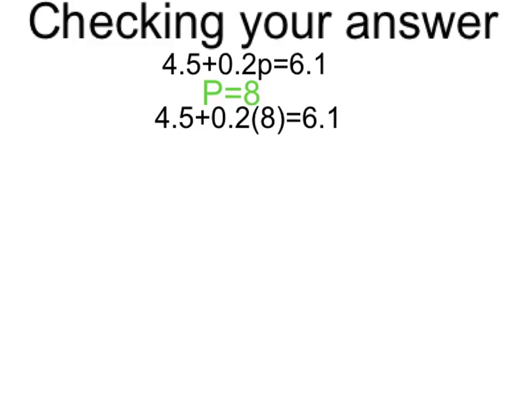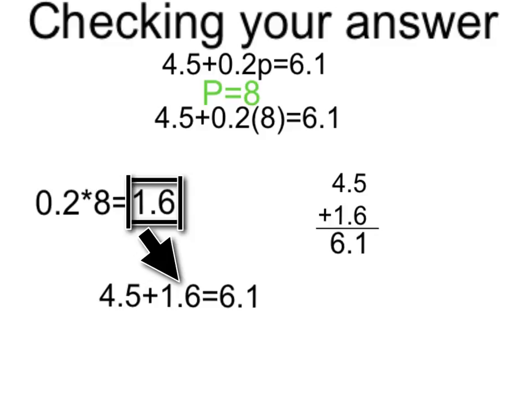You're not quite done yet. What you have to do is check your answer to make sure that p equals 8 is true. You do that by plugging in an 8 wherever you see p in the problem. P is only mentioned once in the problem, so there's only going to be an 8 once. Now that we know p equals 8, our equation is 4 and 5 tenths plus 2 tenths times 8 is equal to 6 and 1 tenth. If we were to solve this problem, it would look something like this. You know that p equals 8 is true if the equation is 4 and 5 tenths plus 2 tenths p is equal to 6 and 1 tenth.